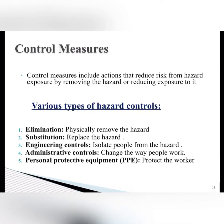Control measures include actions that reduce risk from hazard exposure by removing the hazard or reducing exposure to it. This is also known as the hierarchy of hazard controls. The best control is elimination — physically removing the hazard. The next is substitution — replacing the hazard. Third is engineering control — isolating people from the hazard. Fourth is administrative control — changing the way people work. The least preferred option is PPE — protecting the workers.